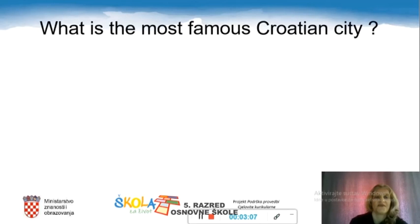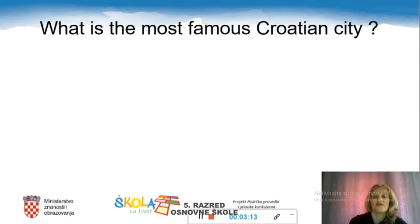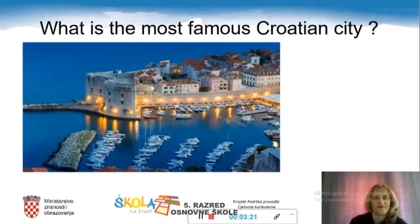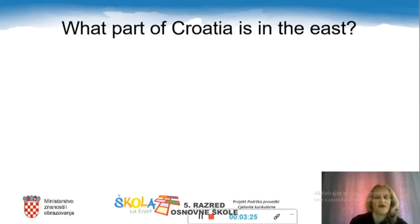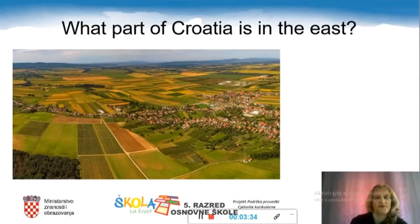Let's go on. Now let's check how much you really know about our country. So what is the most famous Croatian city? It's Dubrovnik. What part of Croatia is in the east? Slavonia.